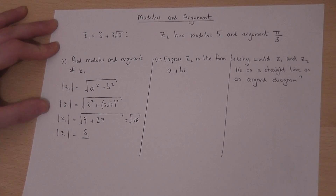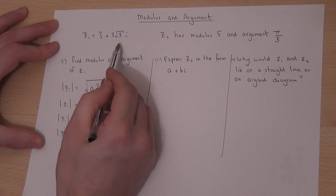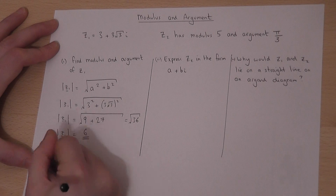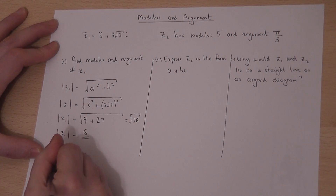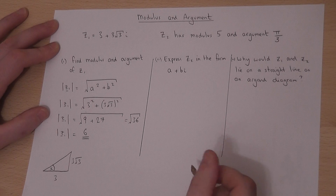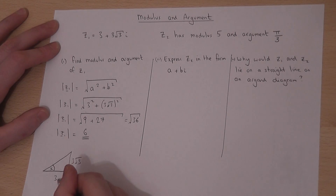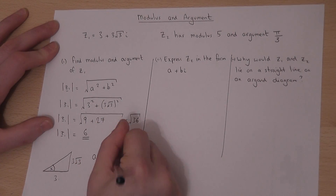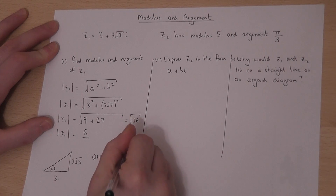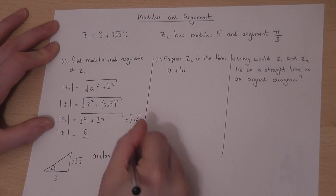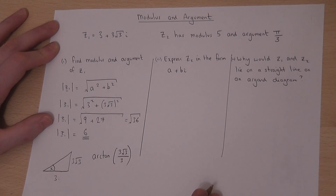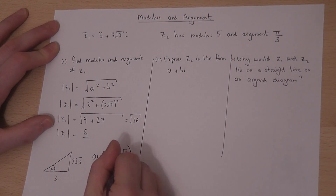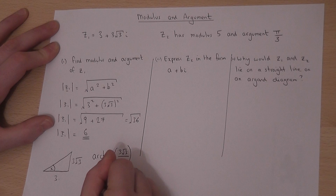For the argument, if you imagine this going across 3 and up 3 root 3 — here's a little diagram — then the argument is this angle here. We know the opposite and we know the adjacent, so to find the angle we would do arctan of the opposite over the adjacent. That would be the argument of z1, and if we work that out on a calculator we end up with the angle pi over 3, or 60 degrees.